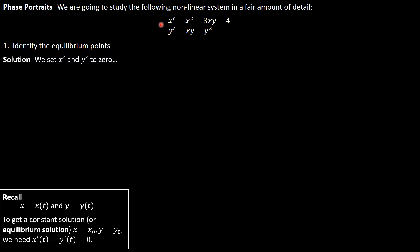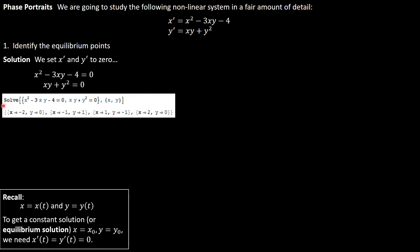With the left hand sides being zero, the right hand sides are also zero and we have this system of two equations in the two unknowns x and y. In general, you can't always solve even this system of algebraic equations by hand, so it's nice to be able to use a computer. Here's code that I used in the program Mathematica by Wolfram Research. I type solve, specify the system of equations that I want to solve and the variables I want to solve for, and I obtained in this example four equilibrium points: negative two zero, negative one one, one negative one, and two zero.